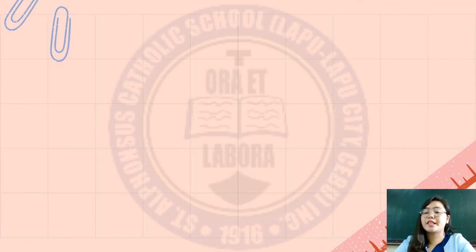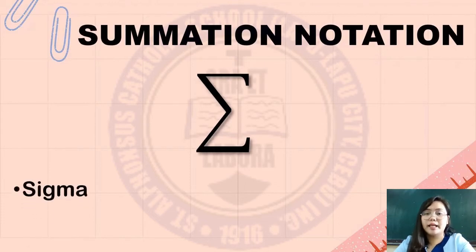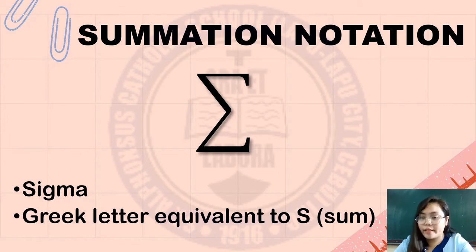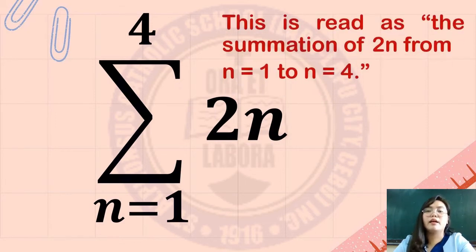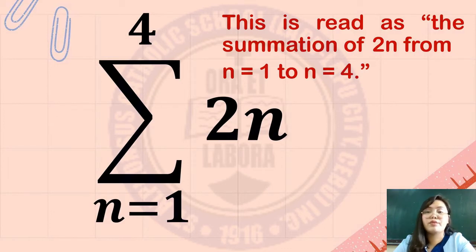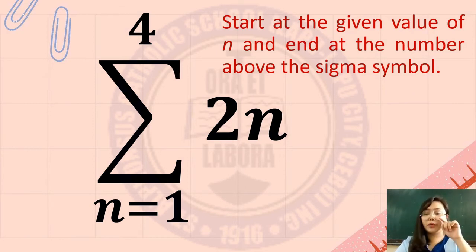This concept of getting the sum of terms can be expressed in a simpler manner using the summation notation, denoted by the Greek letter sigma. This can be used to indicate the sum of terms in a sequence. You have here the summation of 2n from n equals 1 to n equals 4. The values of n begin from 1 to 4, which is 1, 2, 3, and 4. You start substituting the value of n with the value found below the sigma symbol until you reach the number indicated above the sigma symbol.